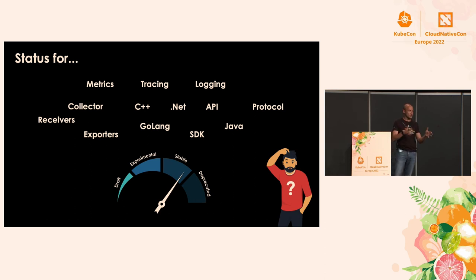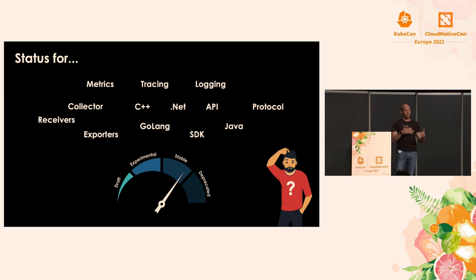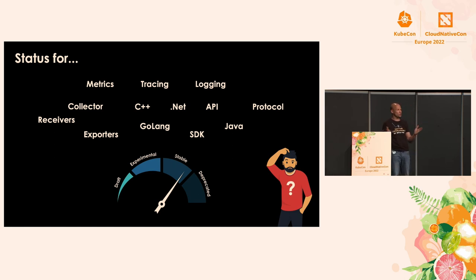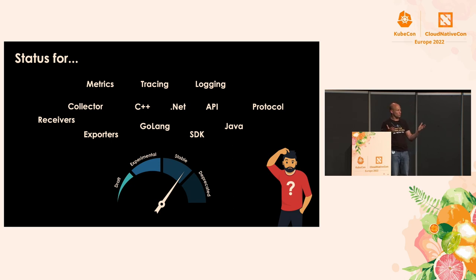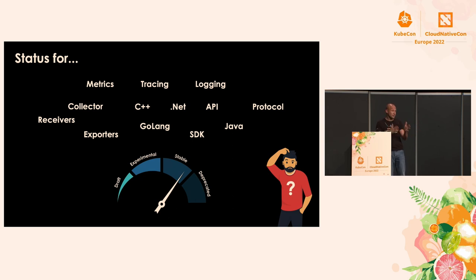Different parts of OpenTelemetry may be in different states of the maturity lifecycle — in CNCF terms: draft, experimental, stable, and deprecated. To align with common industry terms, stable would be GA — generally available — what you'd be looking for to run in production, with guarantees like backwards compatibility. Experimental would be beta, something you can start proof-of-concepting on.